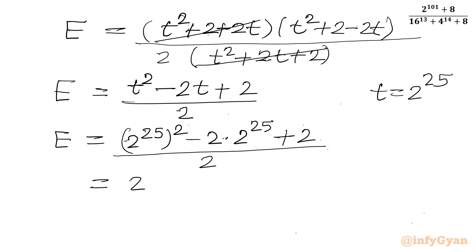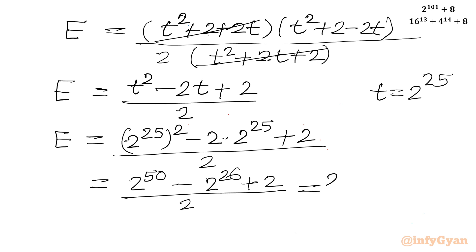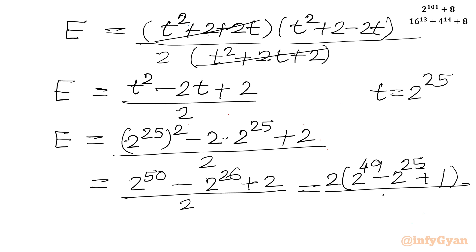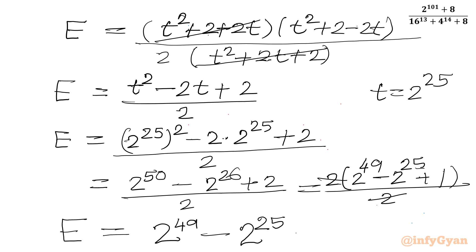Substituting t equals 2 power 25 back, we get E equal to (2 power 50 minus 2 power 26 plus 2) divided by 2. Taking 2 common from the numerator gives E equal to 2 power 49 minus 2 power 25 plus 1. This is our final answer.